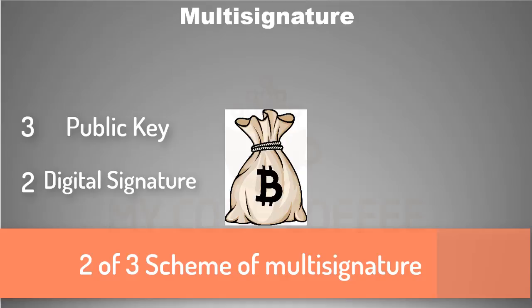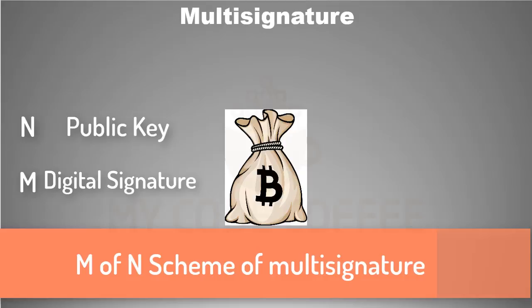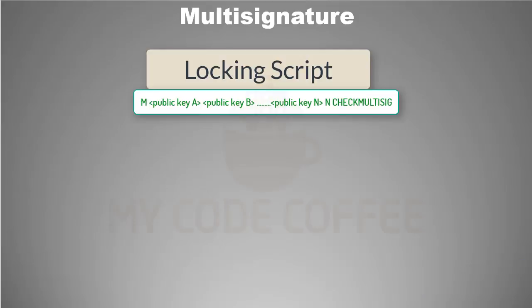Multi-signature scripts set a condition where n public keys are recorded in the script, and at least m of those must provide a signature to unlock the funds. The locking script of an m-of-n multi-signature will look like this. In our example, we are talking about three members, out of which signatures of two are mandatory.